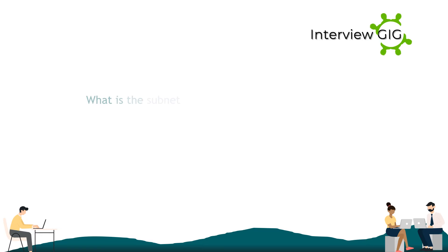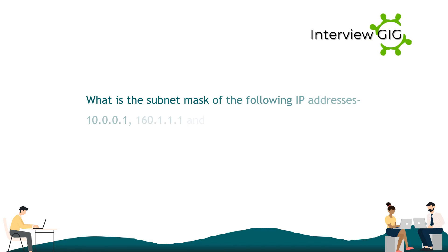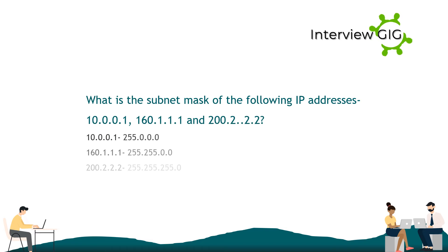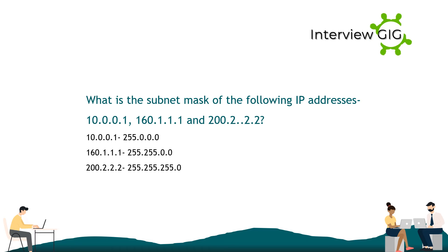What is the subnet mask of the following IP addresses? 10.0.0.1 → 255.0.0.0. 160.1.1.1 → 255.255.0.0. 200.2.2.2 → 255.255.255.0.